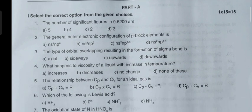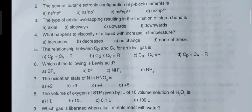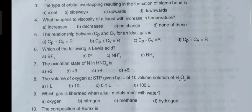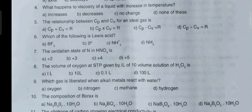The number of significant figures in 0.6200. The general outer electronic configuration of p-block elements. The type of orbital overlapping resulting in the formation of sigma bond. What happens to viscosity of a liquid with increase in temperature.